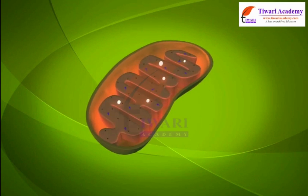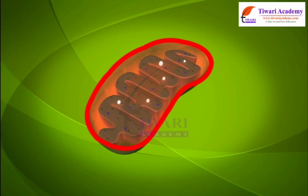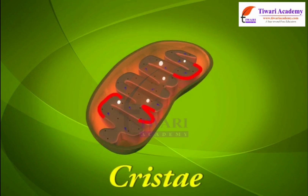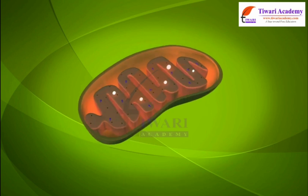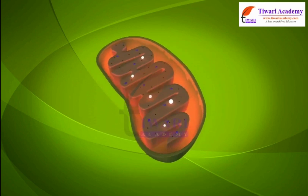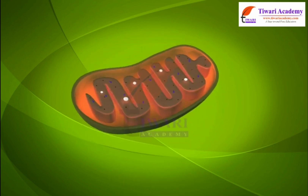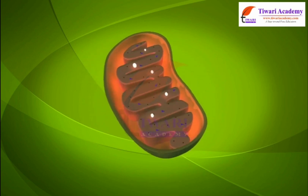Mitochondria contain two membrane coverings. The outer membrane has many pores on it, while the inner membrane has many folds. These folds are known as cristae.